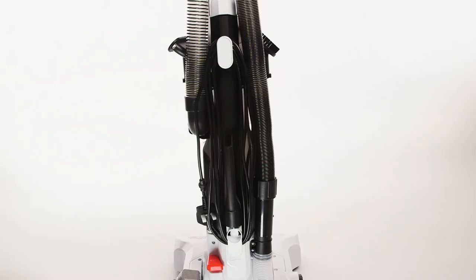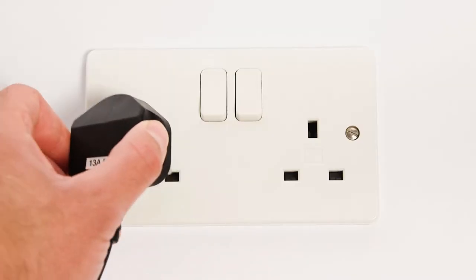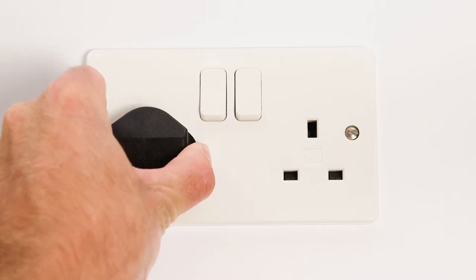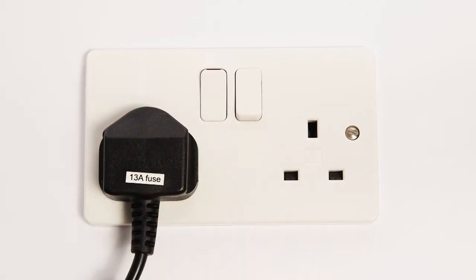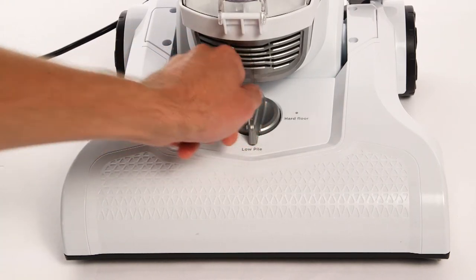To use the vacuum, unwrap the cord and plug it into the main socket. Set the floor head to your required height depending on the type of flooring you are vacuuming.